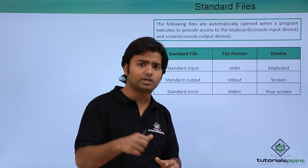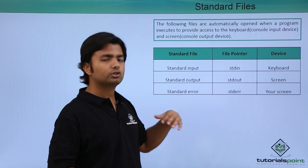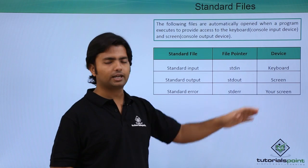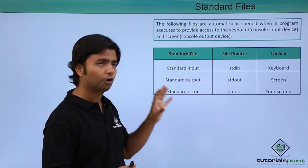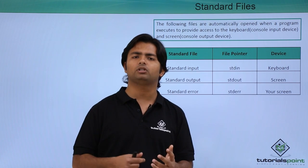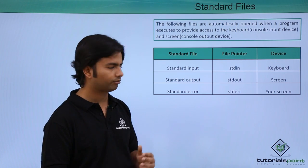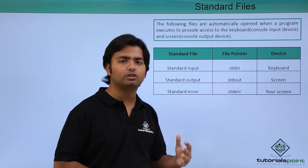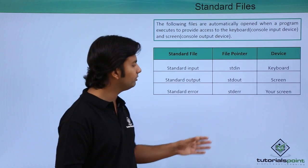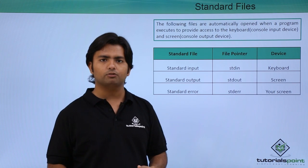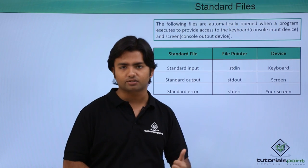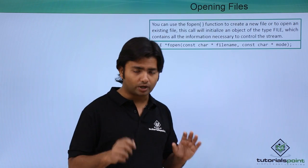When you show some data, it will use stdout, meaning showing the output, and at that time the screen is treated as your major output device. For stderr, whenever there is an error, you will again show it on your screen. These are the three streams we will use while doing operations. In this video, we will not work with stderr, but in a coming video we will cover error handling and how to deal with the stderr stream.